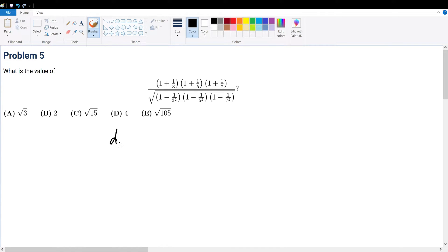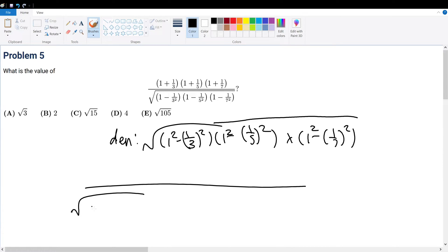So we know that the denominator is just the square root of 1 squared minus 1 over 3 squared, or rather 1 over 3 squared, multiplied by 1 over times 1 over 5 squared, times 1 minus 1 over 7 squared. Now treat 1 as 1 squared. So if we were to treat it like this, that becomes the square root of 1 plus 1 over 3, times 1 plus 1 over 5, times 1 plus 1 over 7.